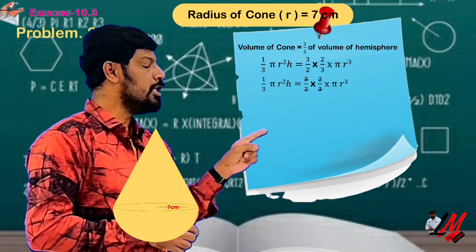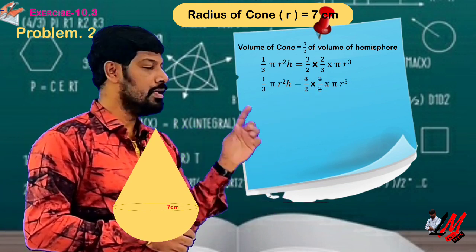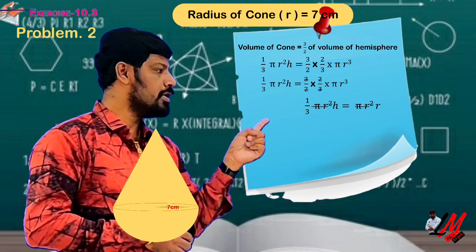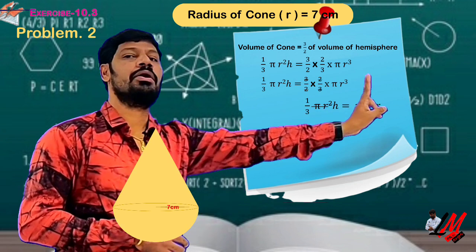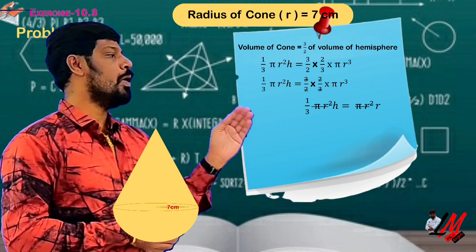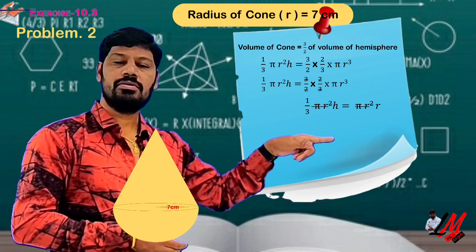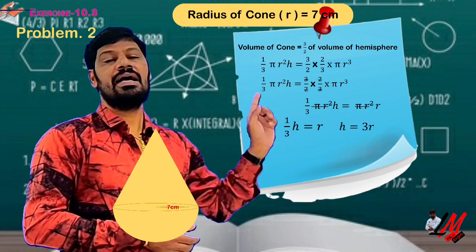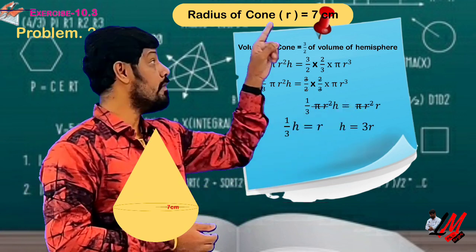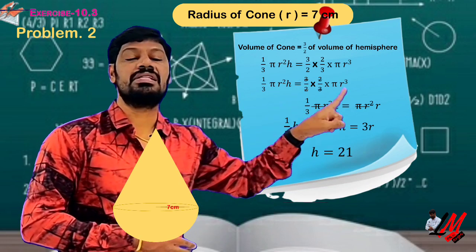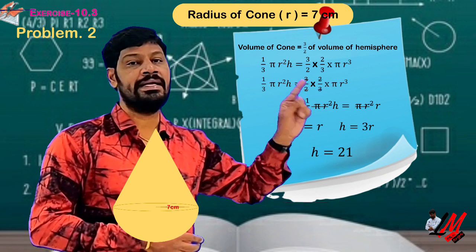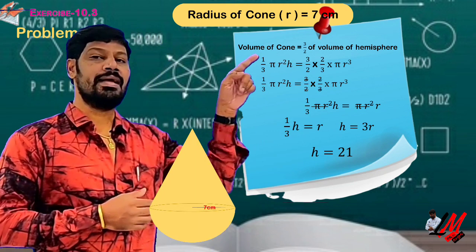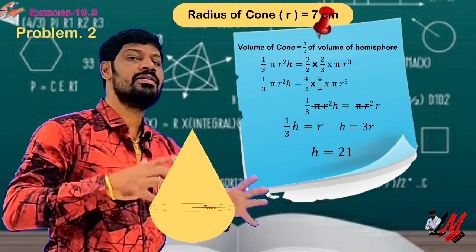So what we have to do is 1 by 3 pi r square h is equals to pi r cube. If we observe, pi and pi cancel each other. Two times of r cancel each other. If we consider 1 by 3 h is equals to r, so h is equal to 3 times 7 which is nothing but 21 centimeter. This is the height of the toy, 21 cm.